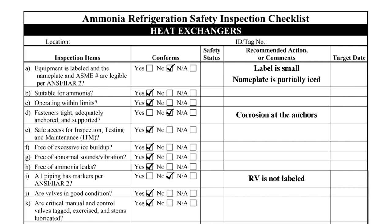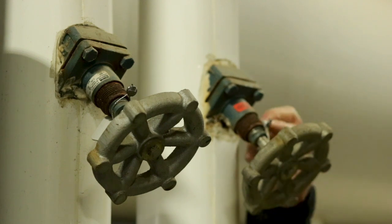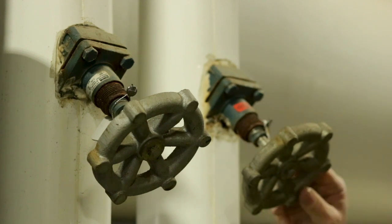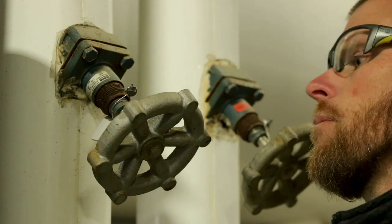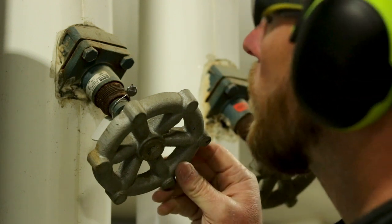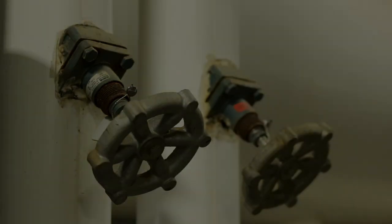Items J and K pertain to valves associated with the heat exchanger. All valves should be visually inspected. Deficiencies that should be recorded include corroded or painted stems, missing hand wheels, damaged seal caps, or excessive valve body corrosion.